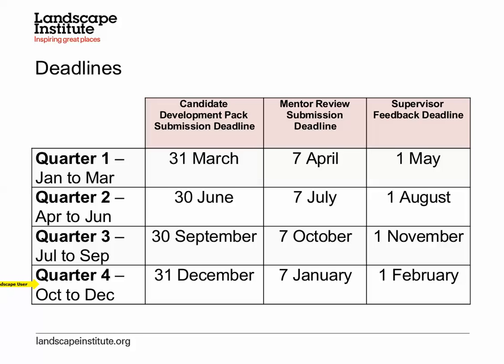The December deadline does cause some problems because many people are doing things other than filling out development logs. Overall, having deadlines at the end of each quarter makes them easier to remember. Mentors have an additional week after the candidate deadline — so a week after 31st March gives the 7th April, then 7th July, 7th October, and 7th January. The January deadline isn't popular and the 7th April can overlap with Easter, but these are real-life deadlines.